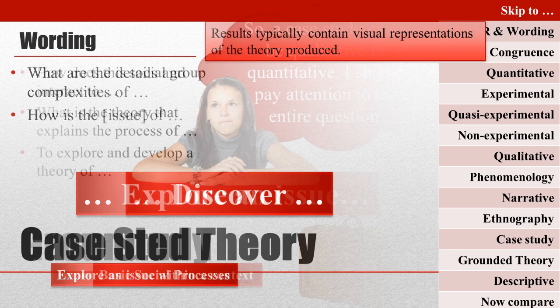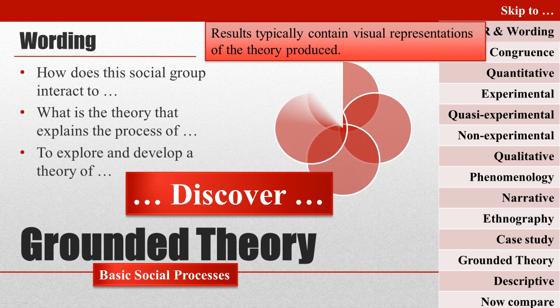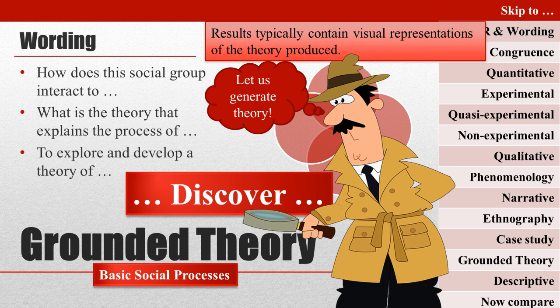If your question is about some kind of process, it's a good bet that grounded theory is your best design. Grounded theory is all about examining basic social processes. The goal of grounded theory is to develop a theory to explain basic social processes in a way that is grounded in data. The central question may be presented as a broad statement or broad question that allows for an in-depth explanation of the process. The word 'discover' is often used in the purpose statement, along with phrases like 'develop a theory of' or 'discover the process of.'